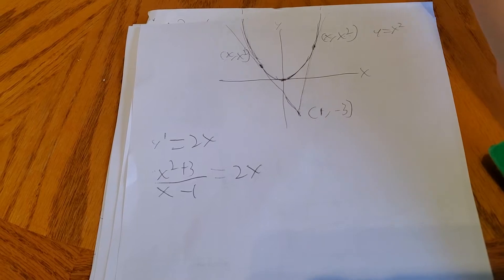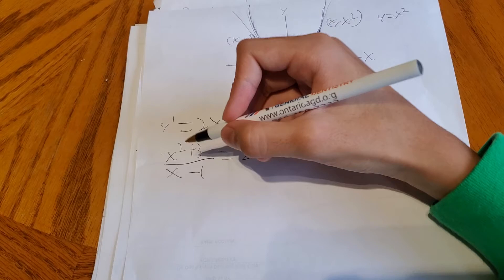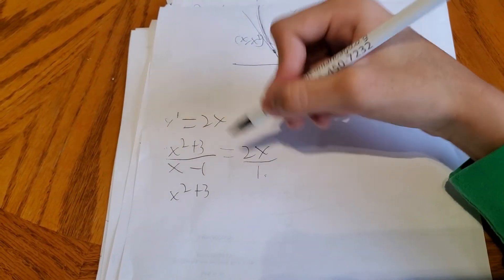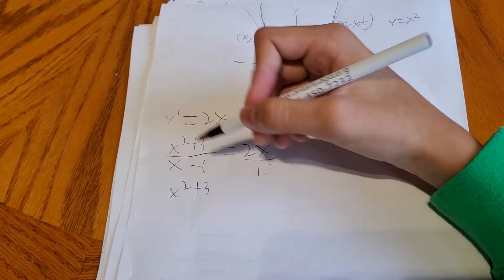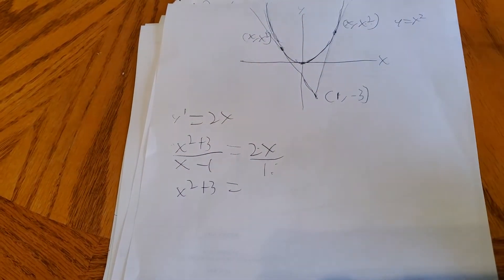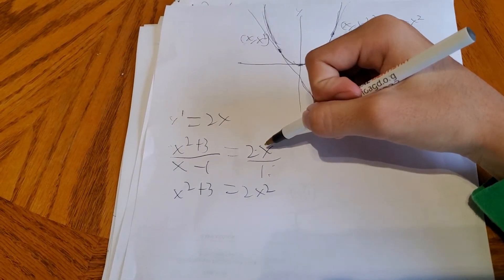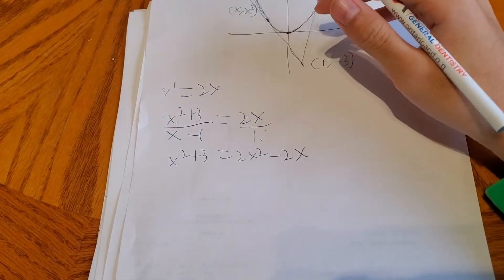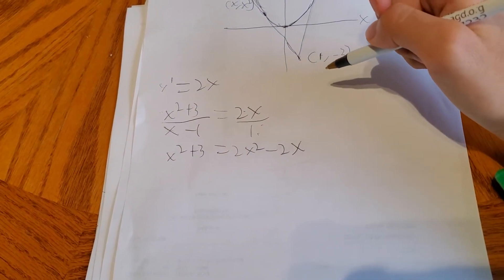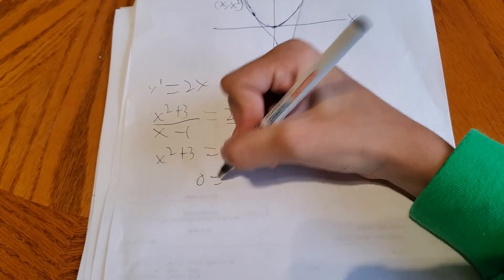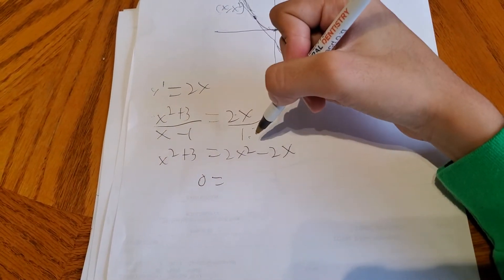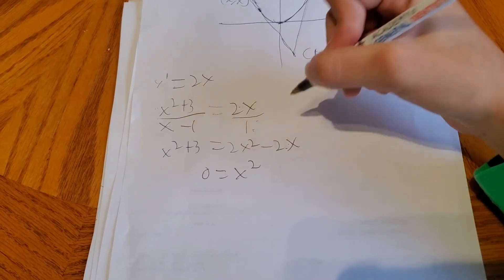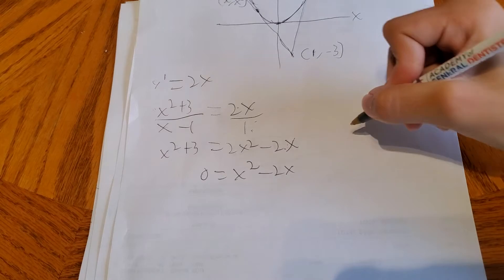From here we're going to cross-multiply to solve for x. x squared plus 3 equals 2x times x minus 2x times 1, which gives us 2x squared minus 2x. Now we bring everything to one side to set the equation equal to zero. So 0 equals 2x squared minus x squared, minus 2x, minus 3. That simplifies to 0 equals x squared minus 2x minus 3.